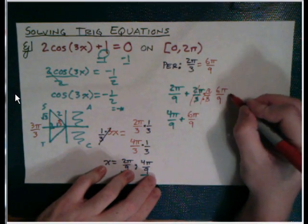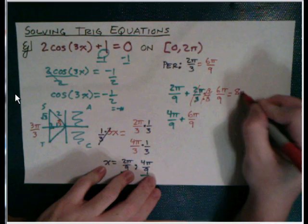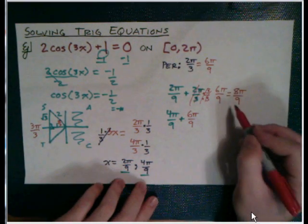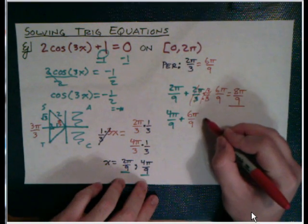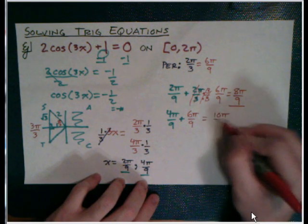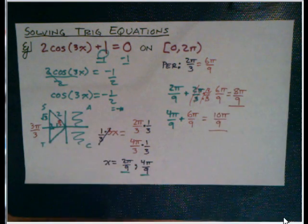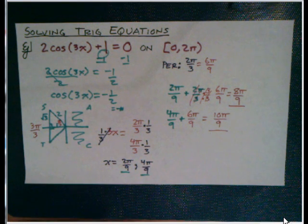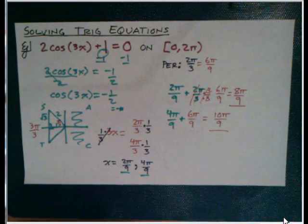So we're actually going to be adding 6 pi over 9 each time because that's really our period. Okay, so we can do that. I can do that. So 2 pi over 9 plus 6 pi over 9 is going to give me 8 pi over 9. So there's a second solution. And then here, 4 pi over 9 plus 6 pi over 9 is going to be 10 pi over 9. So there's our fourth solution. So now we have four total solutions.